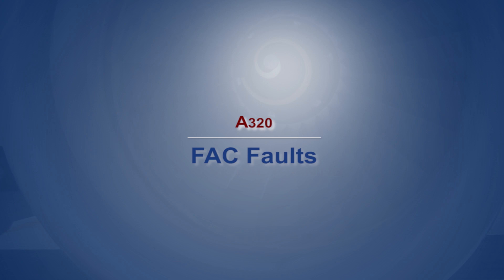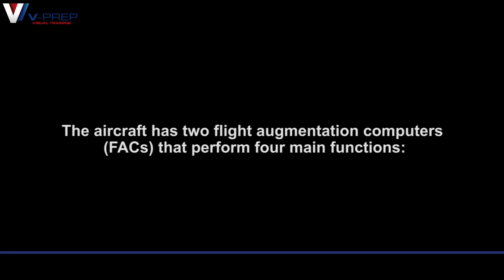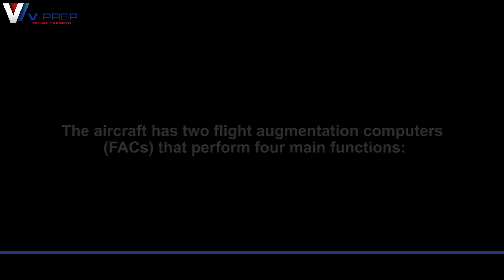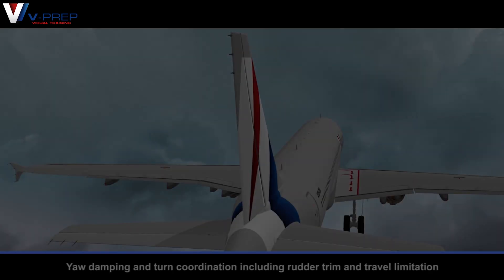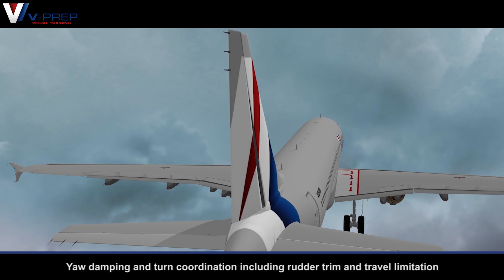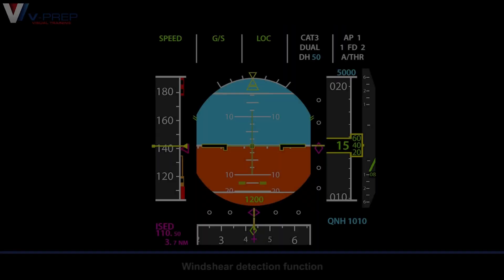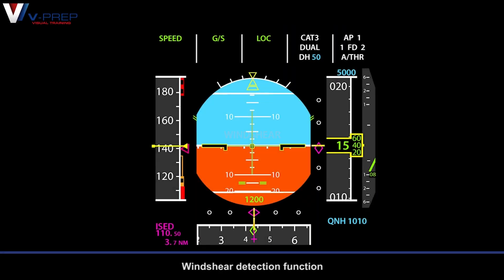A320 FAC Faults. The aircraft has two flight augmentation computers that perform four main functions: yaw damping and turn coordination, including rudder trim and travel limitation, and wind shear detection function.